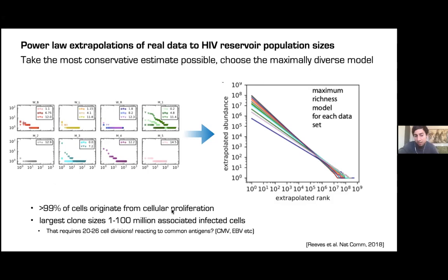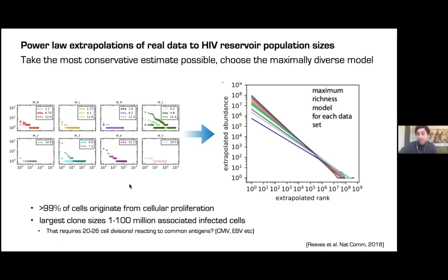The largest clone sizes could be one to maybe a hundred million associated infected cells; extrapolating this model requires 20 to 25 cell divisions. This is not homeostatic cell division — it has to be in response to some sort of antigenic stimulus, a large expansion. I would predict that the largest clones would be oscillating, so you wouldn't necessarily find the same clone at the top every time if it's really an antigenic response.